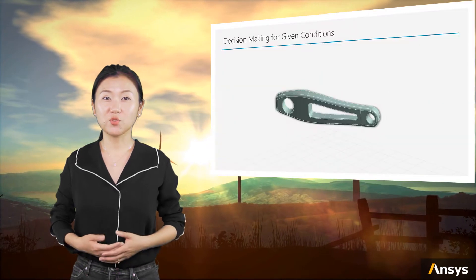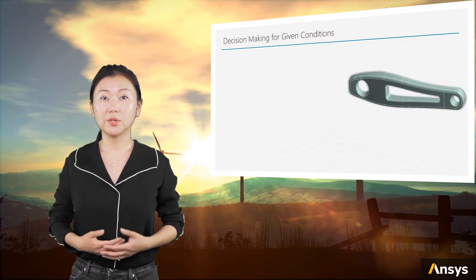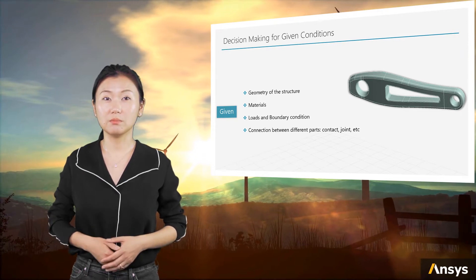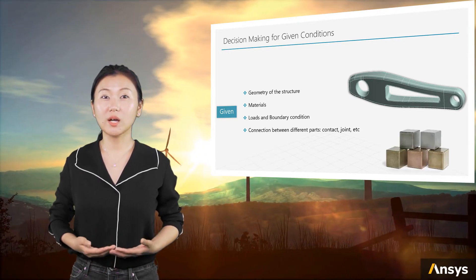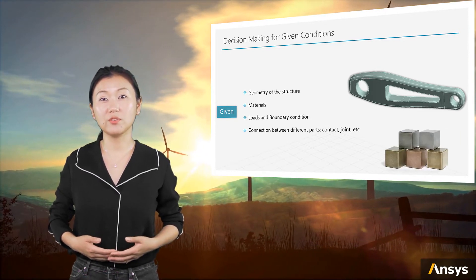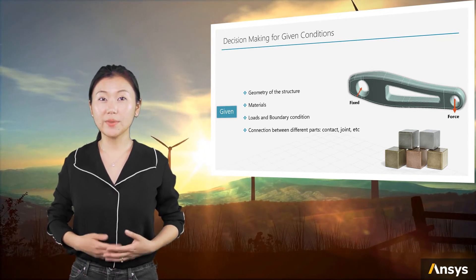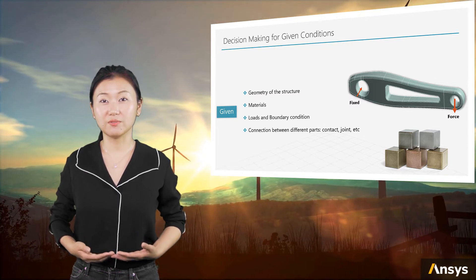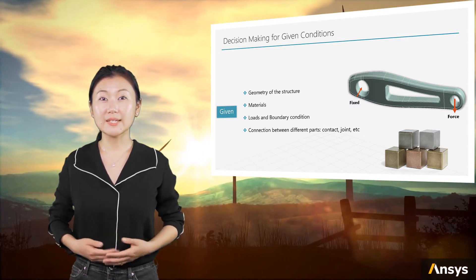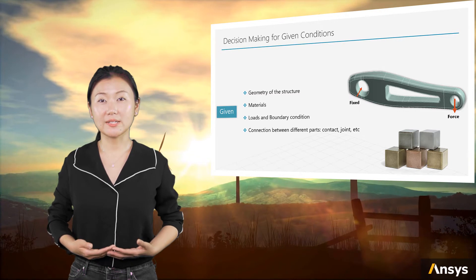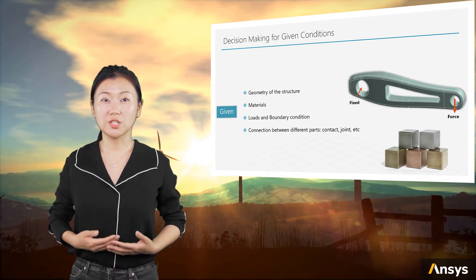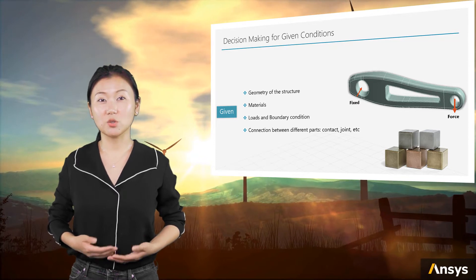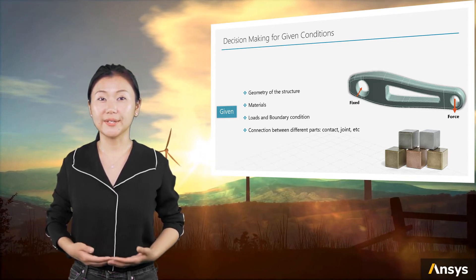You will need to make decisions for geometry. The geometry can be created as detailed as possible, but only as necessary for the problem. You will need to decide what kind of material model should be used for different parts of the problem. You also need to determine what the appropriate loads and boundary conditions are to represent the realistic condition for the problem. Besides this, if there are multiple bodies in one problem, you might also need to determine the connection between them — should it be considered as contact or joint, and what kind of contact or joint is appropriate?